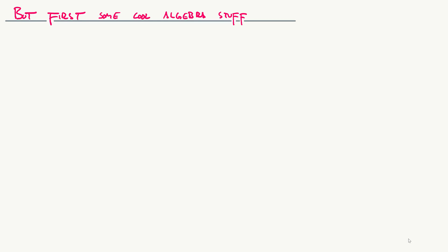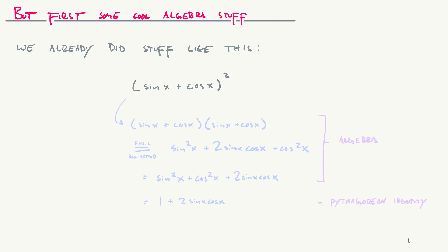So first let's go through some cool algebra stuff. We already talked about expanding something like (sin x + cos x)² where you use the box method or the FOIL method. Essentially it's just (a + b)² = a² + 2ab + b², and you get to go this additional step where sin²x + cos²x = 1 because that's a Pythagorean identity.